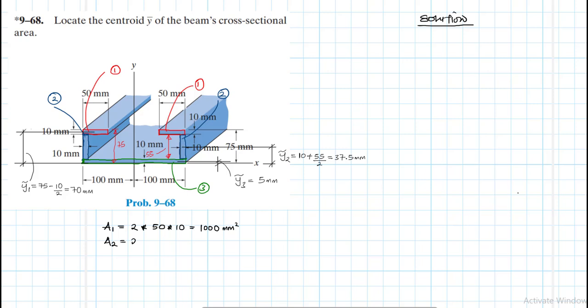Area 2, they are in pairs, so it will be 2 times 10 times 55. And this gives us 1100 mm squared.